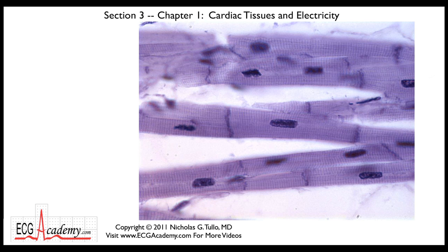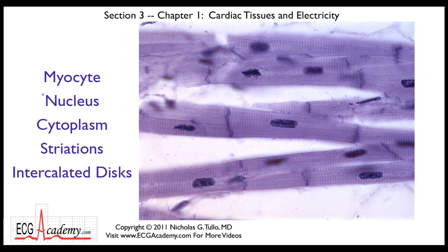The heart muscle is unique — it's different from the muscles in our arms and legs, and different from the muscle in the walls of our intestine. It has these branching cells that under the microscope have some very characteristic parts. A heart muscle cell is referred to as a myocyte — myo meaning muscle and cyte meaning cell. The parts of this myocyte include this dark region here, which is the nucleus. The nucleus contains the DNA and basically runs the cell through chemical messengers. The rest of the cell is known as the cytoplasm, where other organelles are found. In particular, you've got these very thin lines running through the cytoplasm, known as striations.